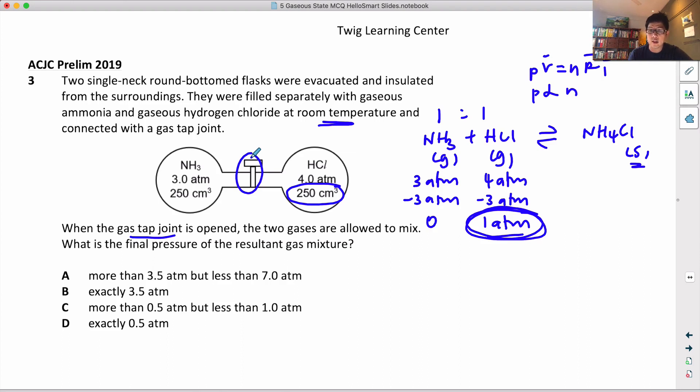So if it can move around in the volume that's double, the pressure will actually half. Theoretically it should be 0.5 atm - half of 1 atm.